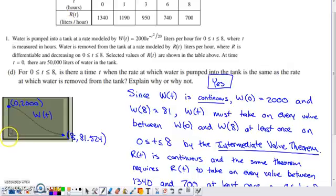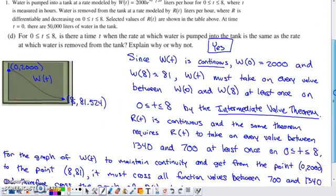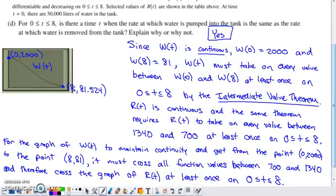If W on the same range of T values has to get from this Y value to this Y value while crossing all Y values in between, yes, there's no way that W(t) and R(t), if we're able to graph it, are going to be able to not cross each other or not equal each other at least once within that interval. So it is definitely kind of wordy here.